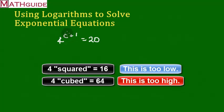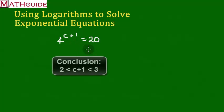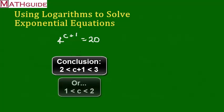So I know that c plus 1 has got to be somewhere between 2 and 3. I can approximate, but that's not good enough. I want the exact answer.